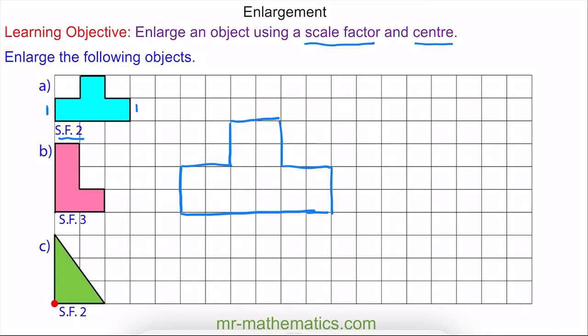So here we have the enlarged image of the object in question A. For question B I am going to enlarge the L shape by a scale factor of 3, which means we make every edge 3 times as big.